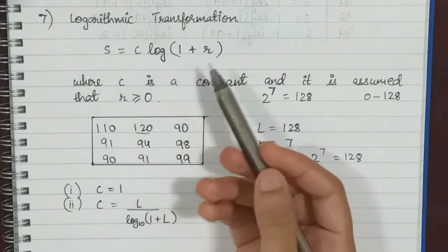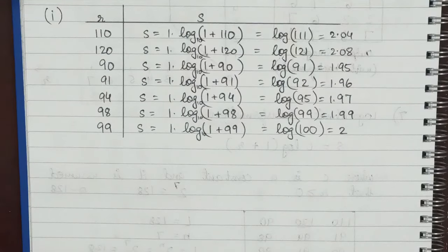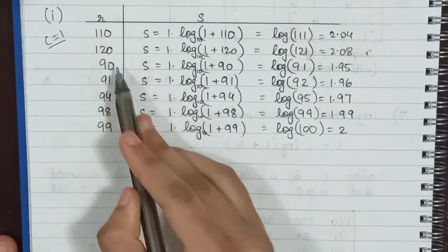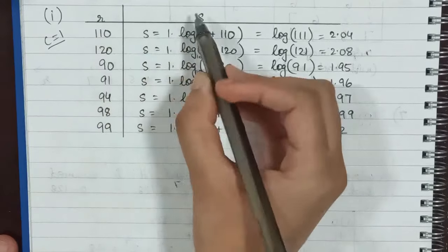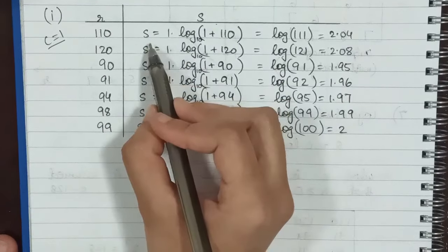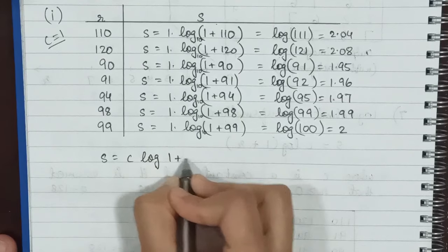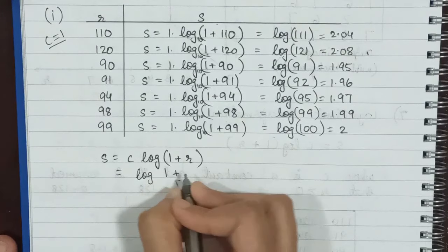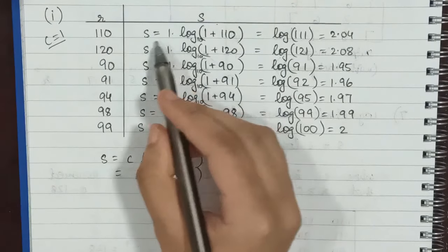We have this image and need to calculate the logarithmic transformation for two cases: c = 1, and c = L / log₁₀(1 + L). For the first case, c = 1, we take all the individual pixel values (r values) and calculate s for each using s = c · log(1 + r), which simplifies to s = log(1 + r).